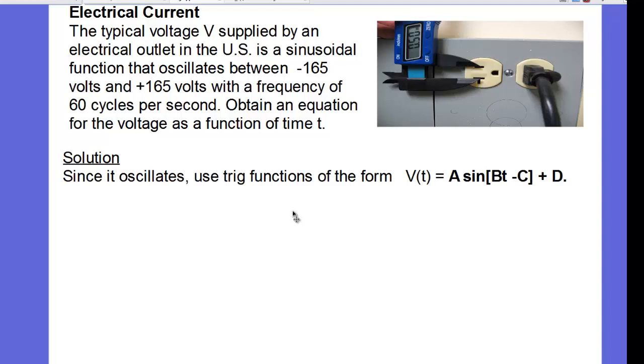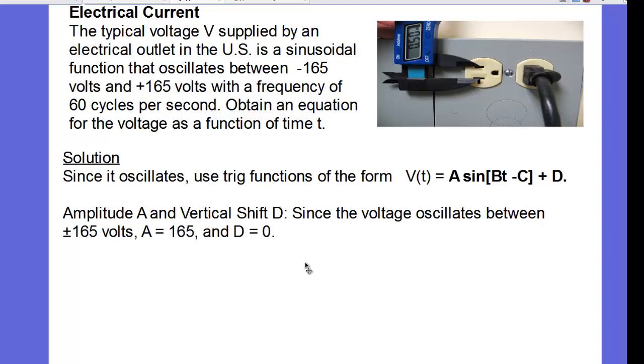Since it oscillates, once again, we're going to use that sine function. The amplitude A varies between plus or minus 165 volts, so the amplitude is the absolute value of that, or 165. There is no vertical shift in this case.